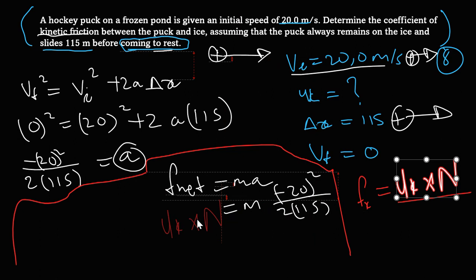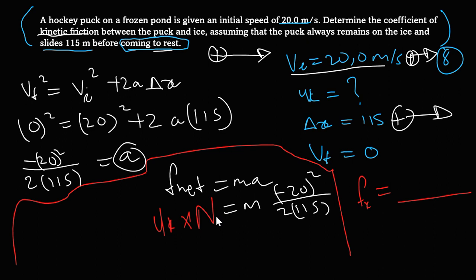But again, just because this thing is on the surface, it's on the flat surface, not inclined, so we know that if it's not inclined, the force normal is equal to mg. So instead of force normal we can just plug this again. So now we have mu k times mg is equal to m times what we got from that.